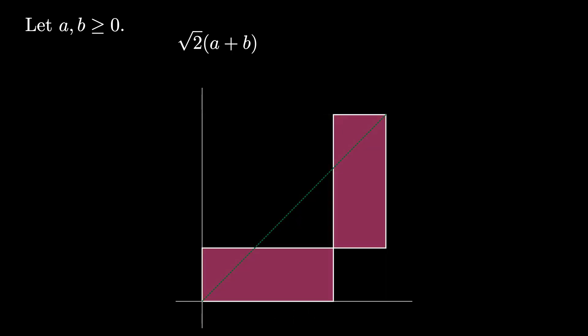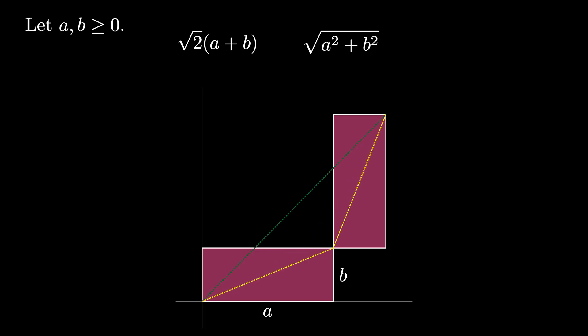Another way to get from the origin to the upper right corner of the square is to travel from the origin to the opposite vertex of the original rectangle along a line with length square root of a squared plus b squared, and then to traverse from that vertex to the opposite vertex in the second rotated rectangle. That length is also square root of a squared plus b squared, so the total length traveled on this path is 2 times the square root of a squared plus b squared.